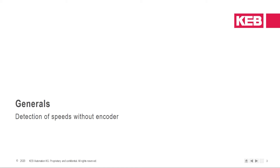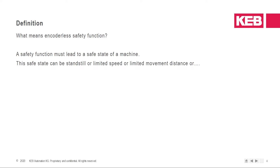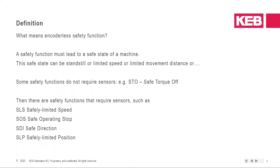Some generals on detection of speed without encoder. The safety function must lead to a safe state of a machine. This safe state can be standstill, limited speed, limited movement distance, or whatever. Some safety functions do not require sensors, like STO, SBC, or brake handling. Then there are safety functions that require sensors, such as safely limited speed, safe operating stop, safe direction, and safely limited position.